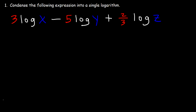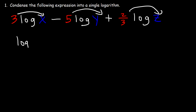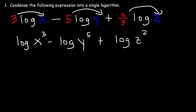Number one: condense the following expression into a single logarithm. The first thing we need to do is move the coefficients to their exponent positions. So this is equivalent to log x to the third power minus log y to the fifth power plus log z raised to the two thirds.